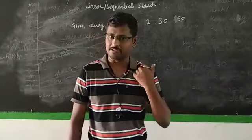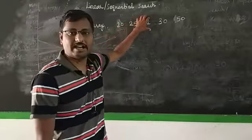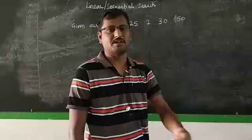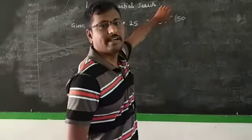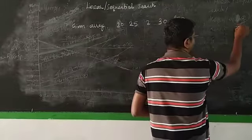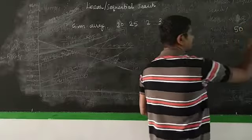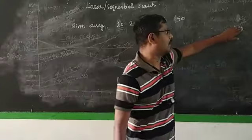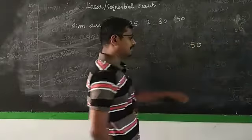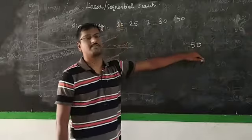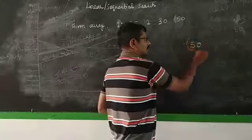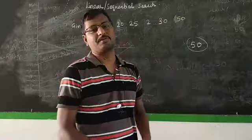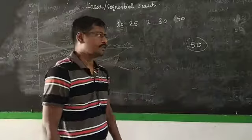So you can see how we search each element in the array. If it's not found, we return minus one. For each array element in order, if the key element matches the target element, we have found our search element. For example, if the key element is 50 and we go to linear search, the first step is to traverse the array.